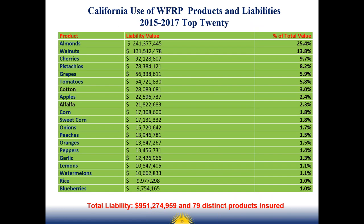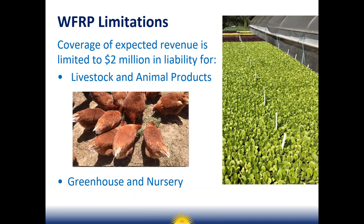In California, a study found that whole farm revenue protection covered 79 distinct products over three years, with nearly a billion dollars in value insured. Top commodities include almonds, walnuts, cherries, and pistachios. Revenue from livestock and animal products is limited to $2 million, as is greenhouse and nursery revenue.